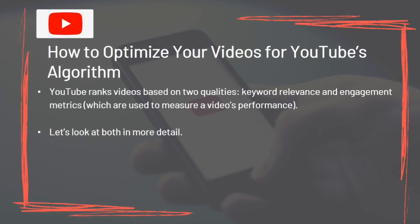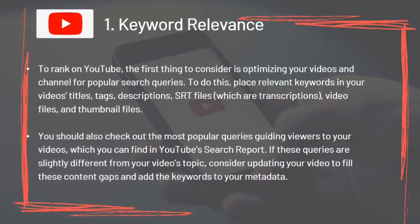YouTube ranks videos based on two qualities: keyword relevance and engagement metrics. To rank on YouTube, optimize your videos and channel for popular search queries by placing relevant keywords in your video's titles, tags, descriptions, SRT files (transcriptions), video files, and thumbnail files. Also check the most popular queries guiding viewers to your videos in YouTube's search report. If those queries differ slightly from your video's topic, update your content to fill these gaps and add keywords to your metadata.